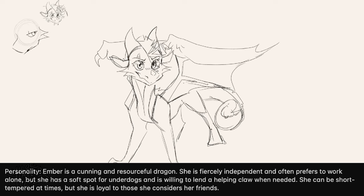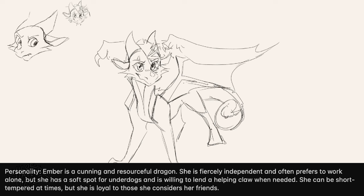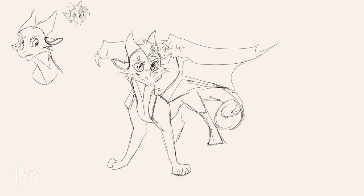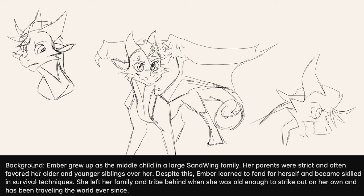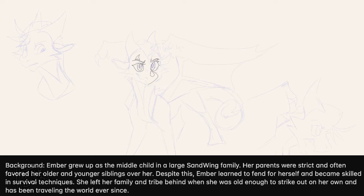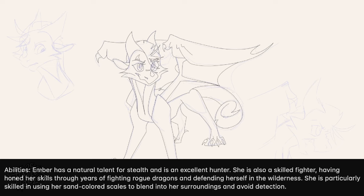Personality: Ember is a cunning and resourceful dragon. She is fiercely independent and often prefers to work alone, but she has a soft spot for underdogs and is willing to lend a helping claw when needed. She can be short-tempered at times, but she is loyal to those she considers her friends. Background: Ember grew up as the middle child in a large Sandwing family. Her parents were strict and often favored her older and younger siblings over her. Despite this, Ember learned to fend for herself and became skilled in survival techniques. She left her family when she was old enough to strike out on her own and has been traveling the world ever since. Abilities: Ember has a natural talent for stealth and is an excellent hunter. She's also a skilled fighter, having honed her skills through years of fighting rogue dragons. She's particularly skilled in using her sand-colored scales to blend into her surroundings and avoid detection.